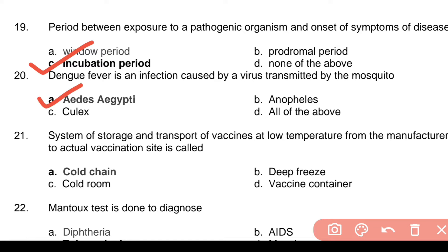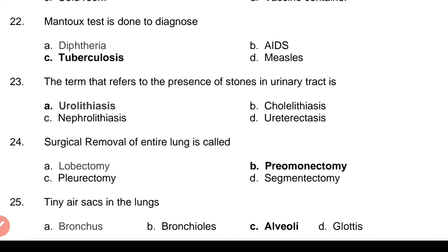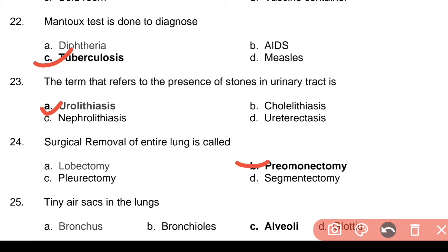Question 20: Dengue fever is an infection caused by a virus transmitted by the mosquito — Answer: a. Aedes aegypti. Question 21: System of storage and transport of vaccines at low temperature from the manufacturer to actual vaccination site — Answer: a. Cold chain. Question 22: Mantoux test is done to diagnose — Answer: c. Tuberculosis. Question 23: The term that refers to the presence of stones in the urinary tract — Answer: a. Urolithiasis.